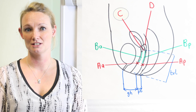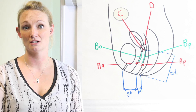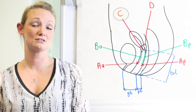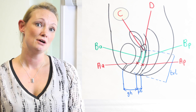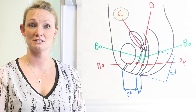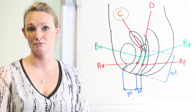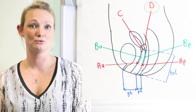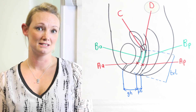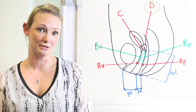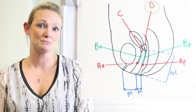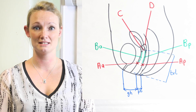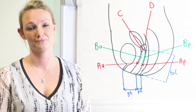C is the most distal part of the cervix or vaginal cuff scar if they've had a hysterectomy, so this could have a big range — around minus ten or could come down to seven, eight or even more. D is the point in the posterior fornix and is often two to three centimetres above point C, but sometimes the cervix is quite flush with the posterior fornix. This is excluded if they've had a hysterectomy.